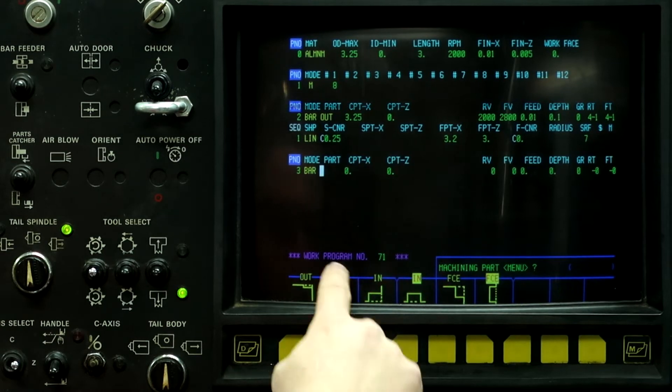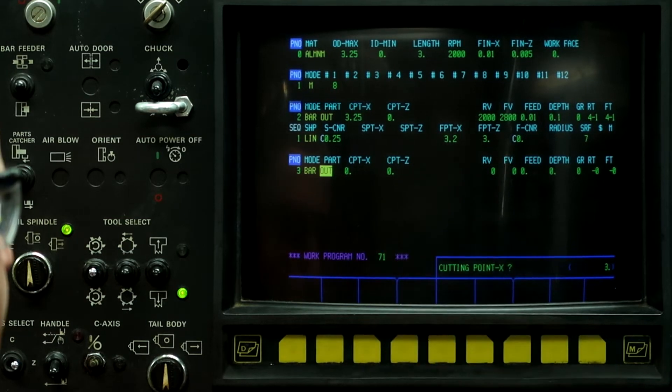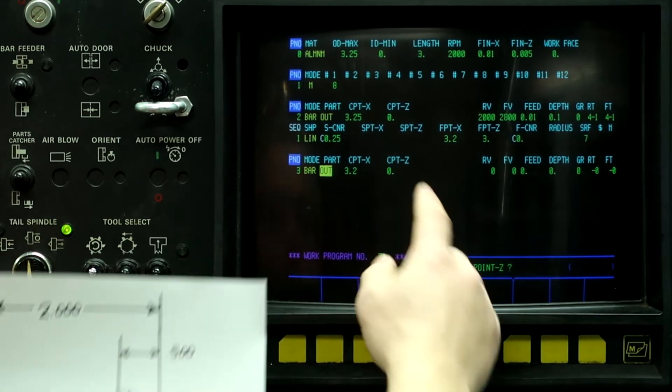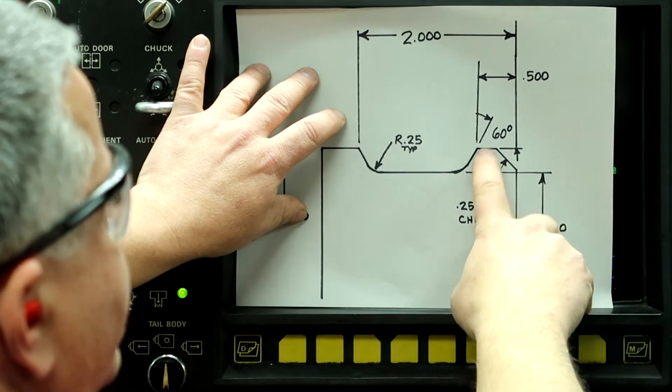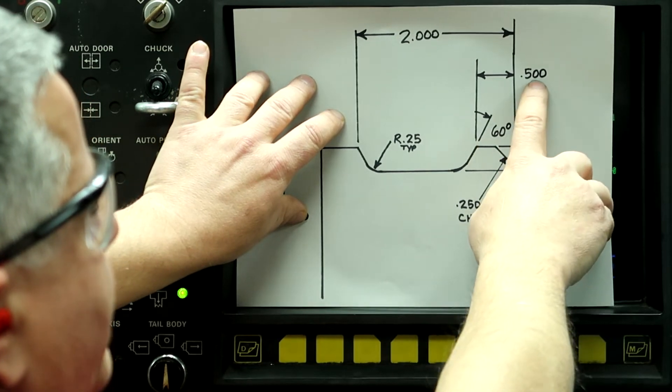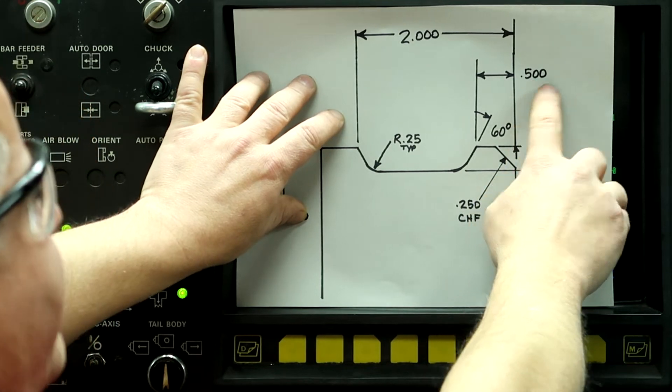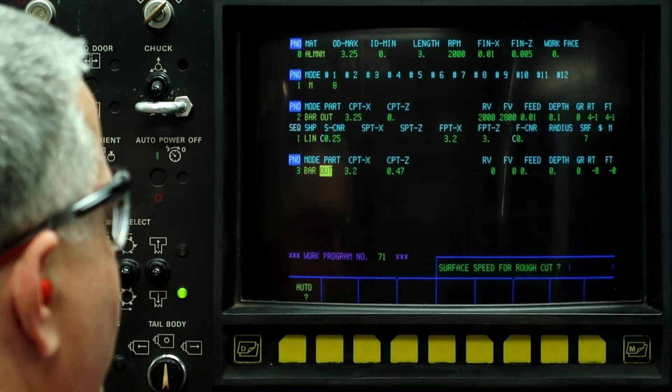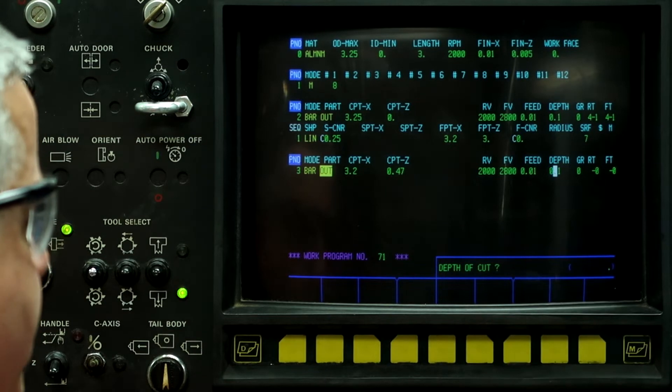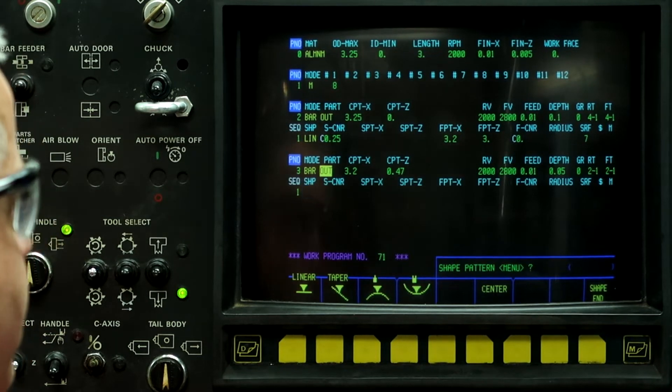So now push bar, highlighted out. Cutting point on X is going to be 3.2 inches and the cutting point on Z is going to be zero. But I'm going to put a radius in here so I need to make this starting point 0.47, and then surface speed auto. On the depth I'm going to change it, and then tool two, offset one.